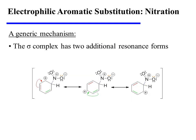The sigma complex has two additional resonance forms. Movement of the red pi bonding electrons over one bond delocalizes the plus charge to a new location on the ring. And similarly, the green pi bonding electrons can be moved to the adjacent bond to delocalize the plus charge to one final location on the ring.